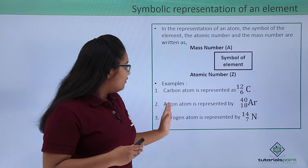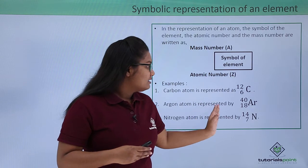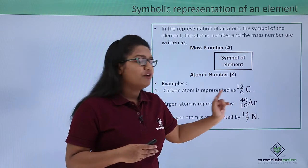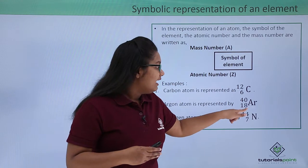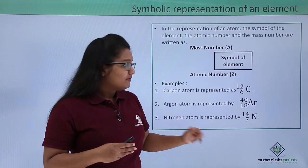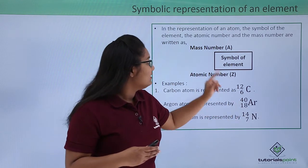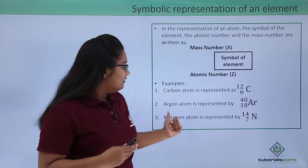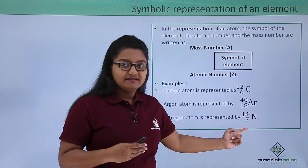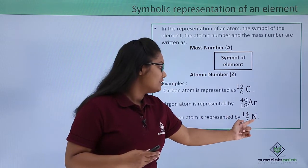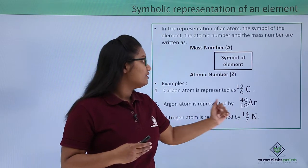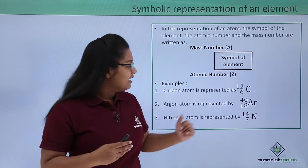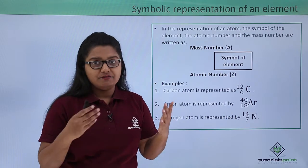For an argon atom, it is represented with 18 at the bottom left and 40 at the top left, so 18 is the atomic number and 40 is the mass number of argon. Similarly, a nitrogen atom is represented as N with 7 at the bottom left and 14 at the top left, where 7 is the atomic number and 14 is the mass number of nitrogen.